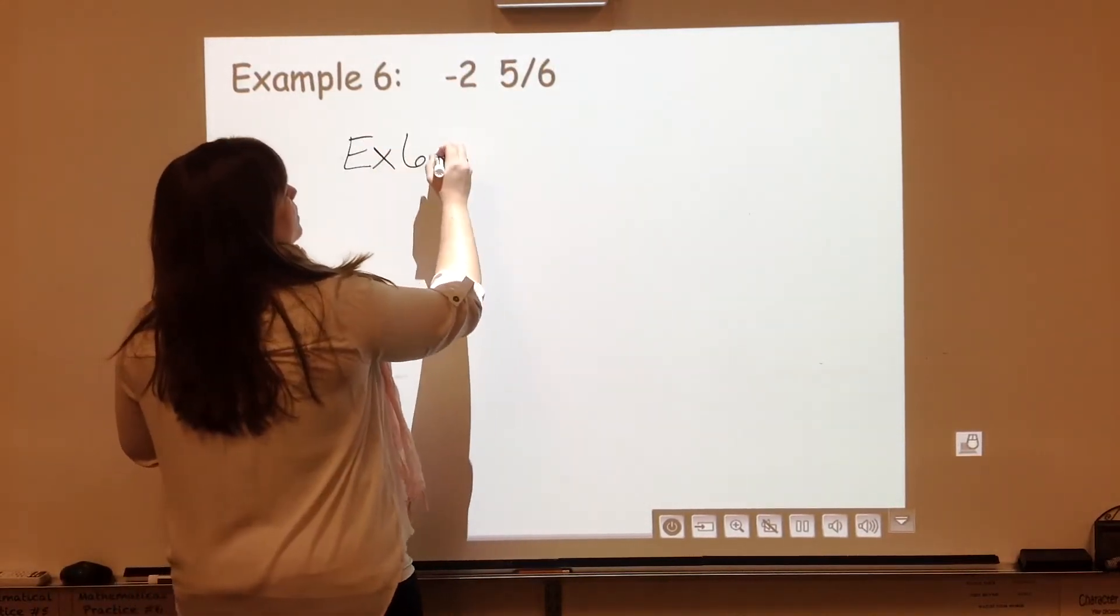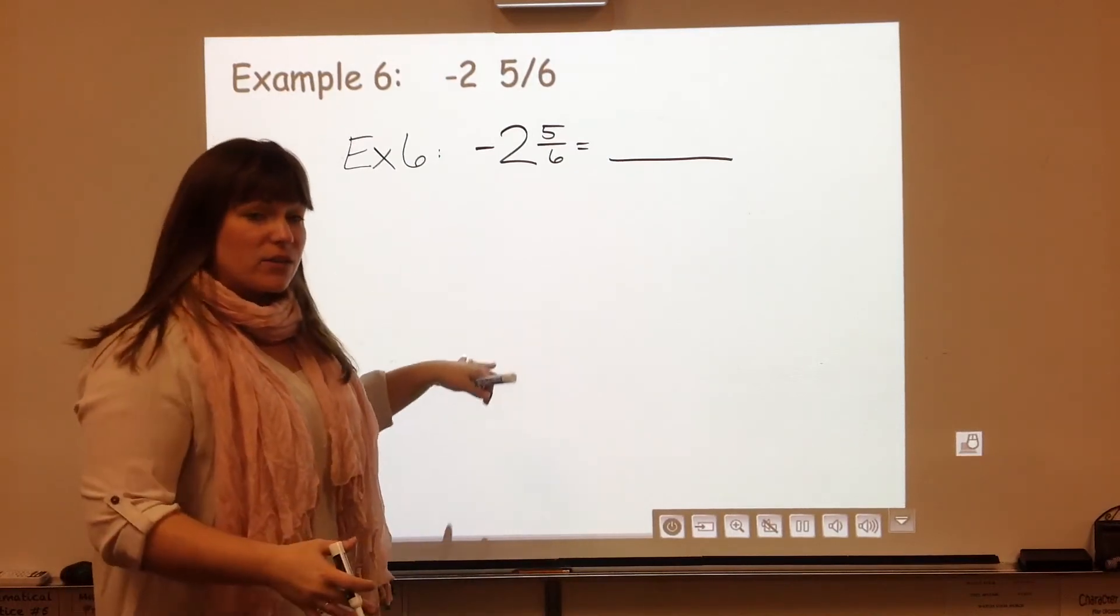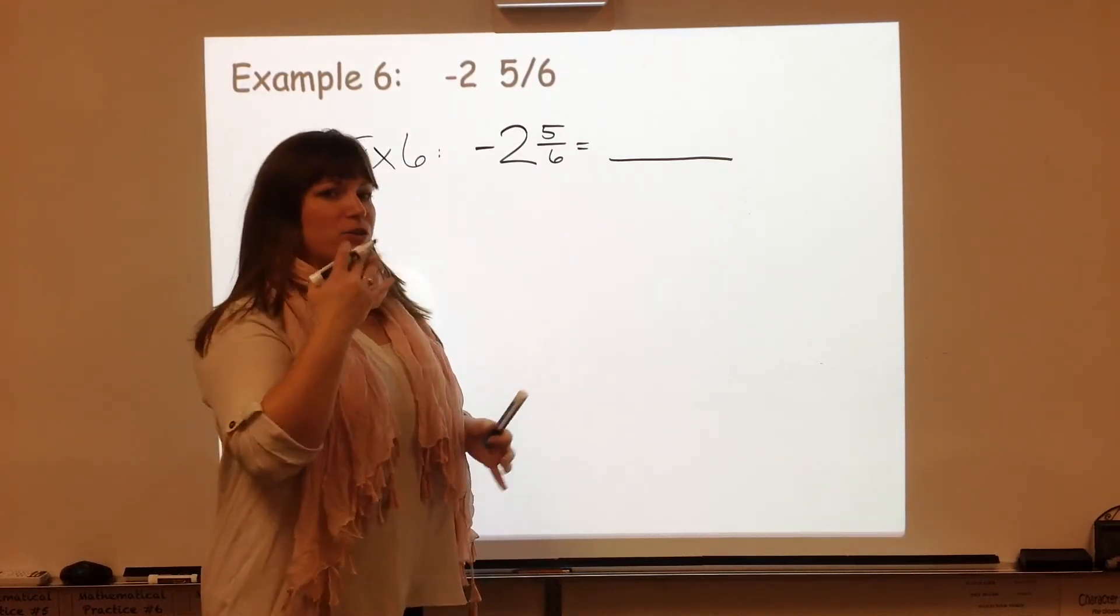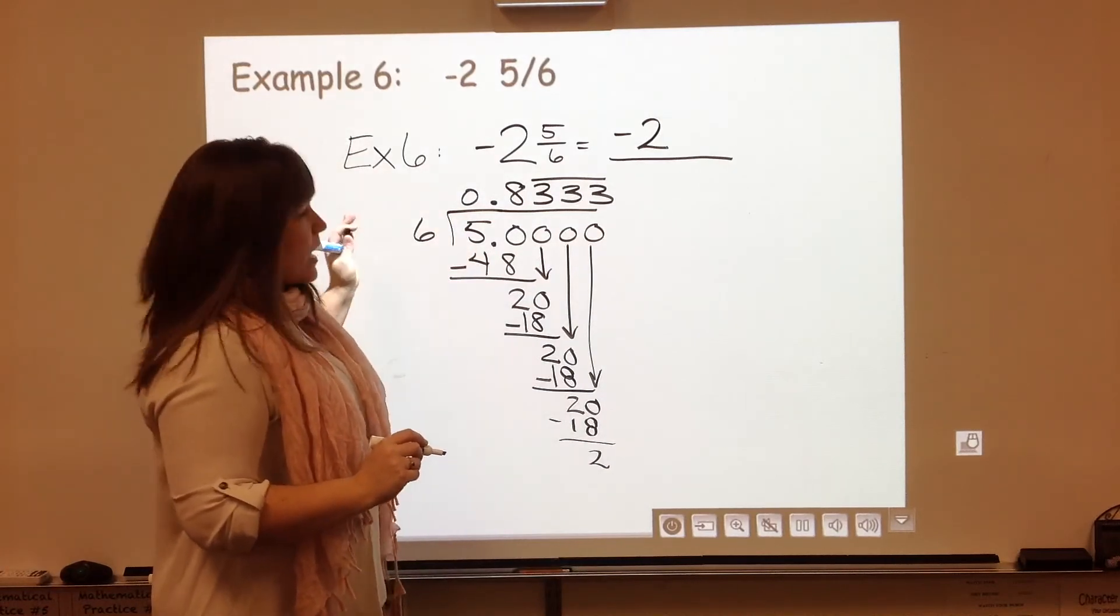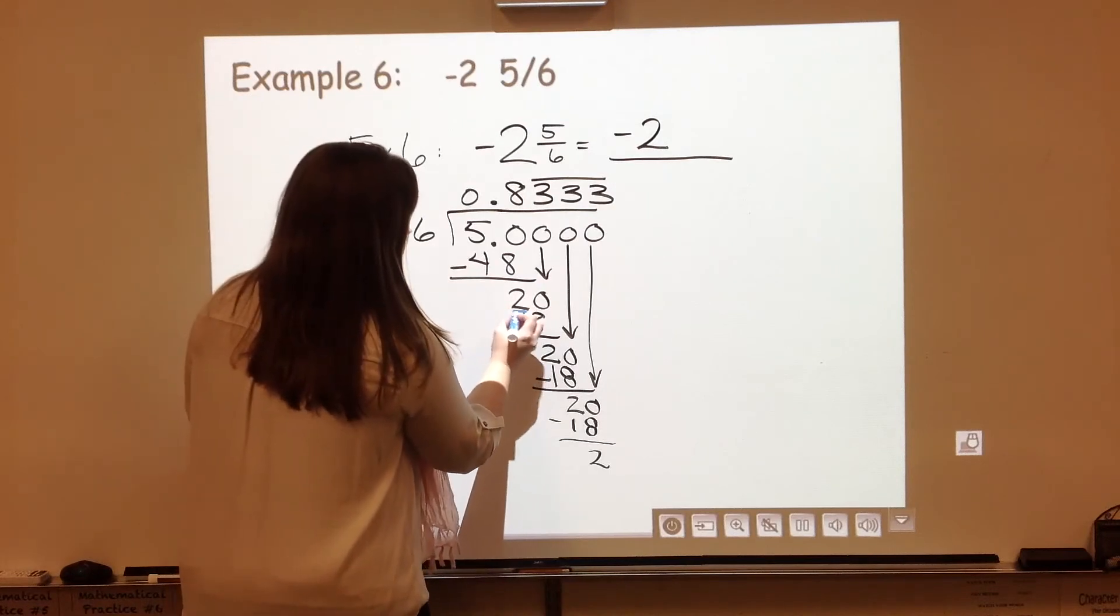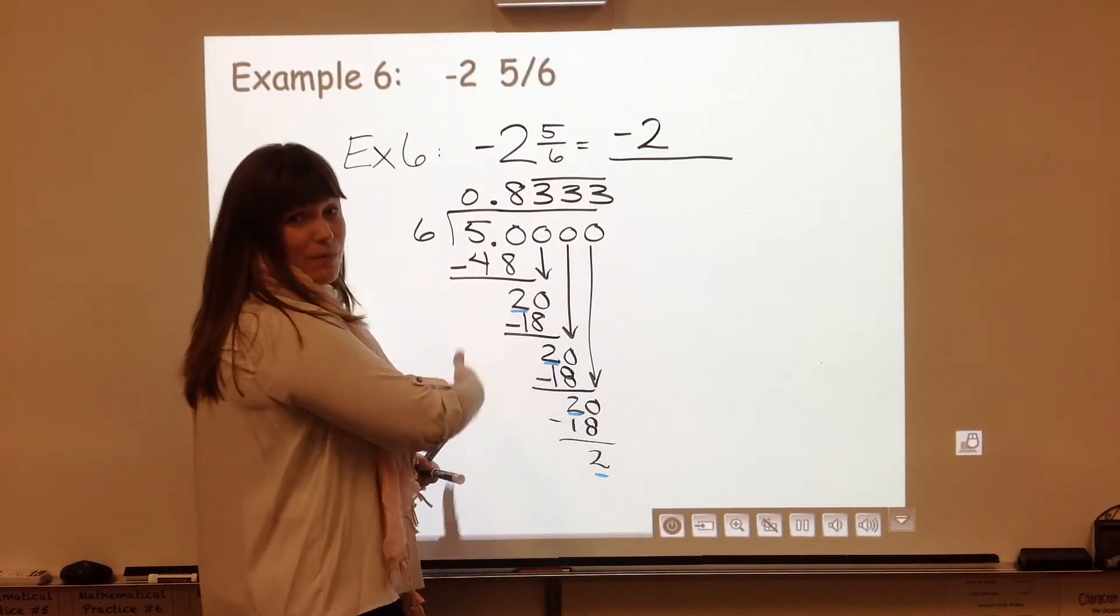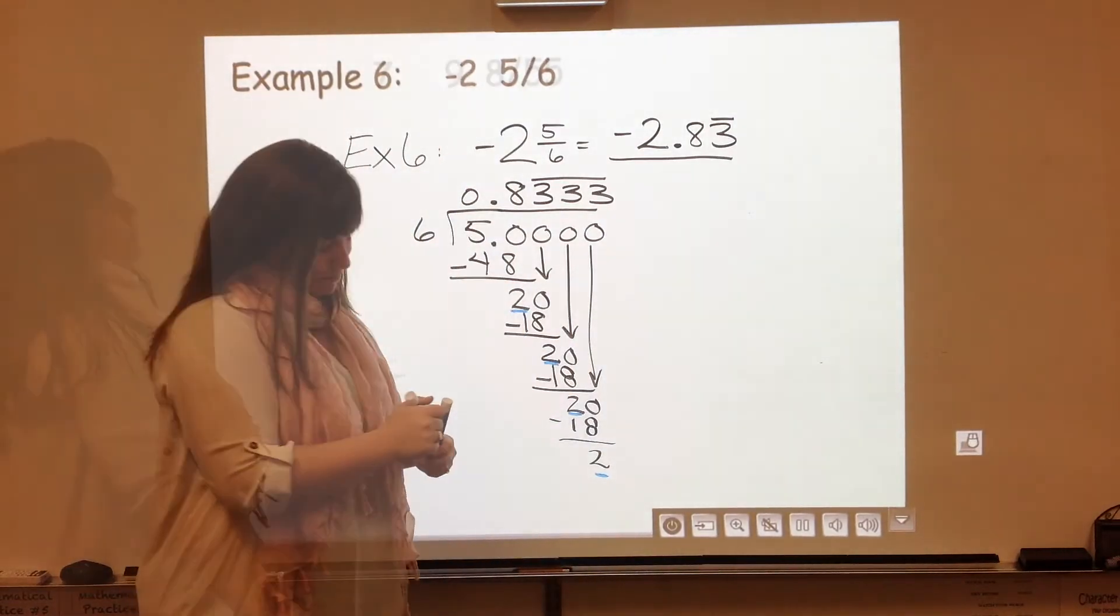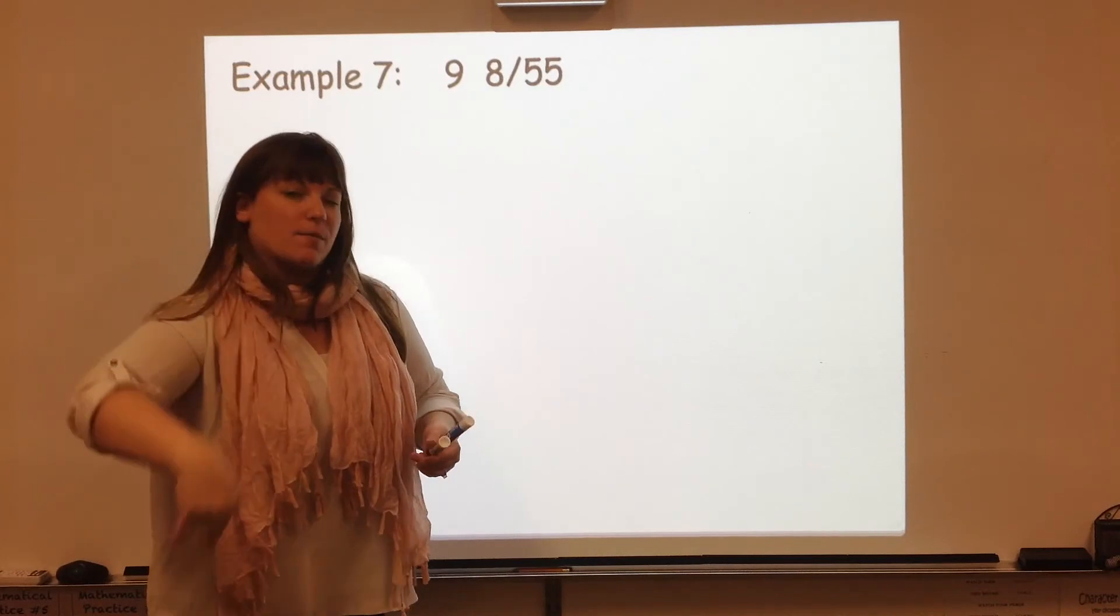Example 6 is going to be negative 2 and 5 sixths. You can go ahead and do this one. This is just another practice problem. We've done examples with it that are similar. Just try it out yourself, and then come back and you'll see if you're right. Notice I have the negative 2 already over on my answer line, and I'm just dealing with 5 sixths. I have divided enough so that I see the pattern of these 2s. And you can stop after 3, meaning 3 times it comes up in the pattern. And my decimal is going to be one number that did not repeat at all, but those 3s went on and on and on.